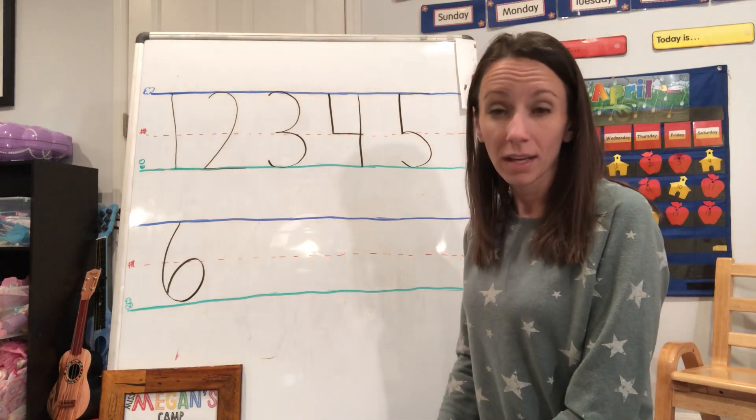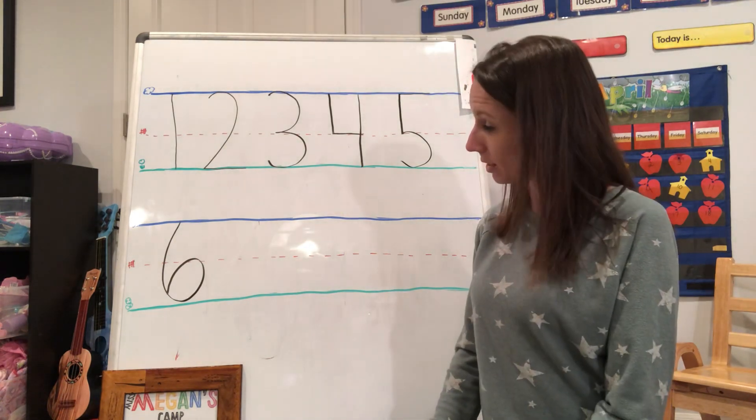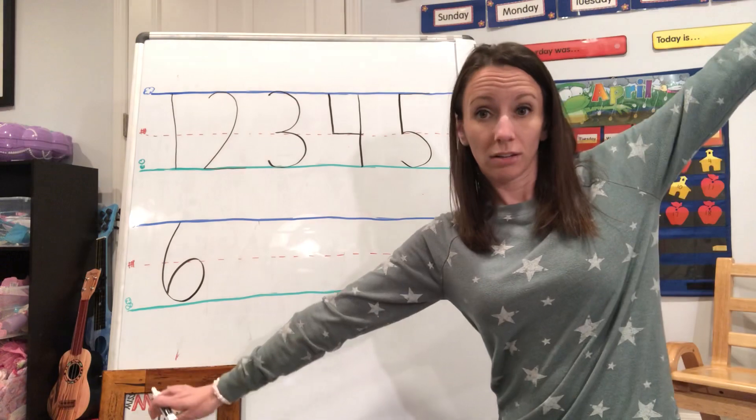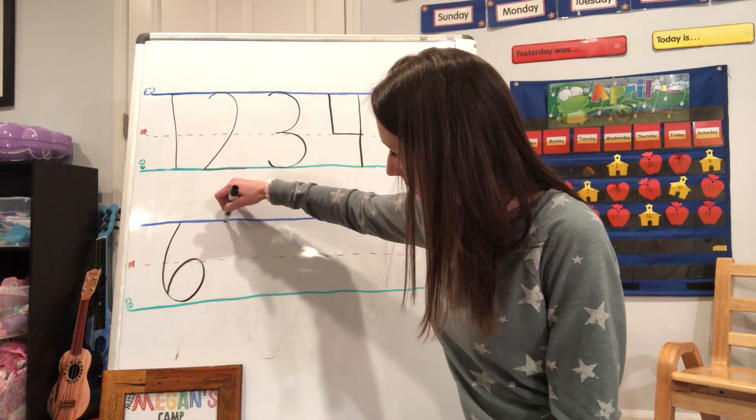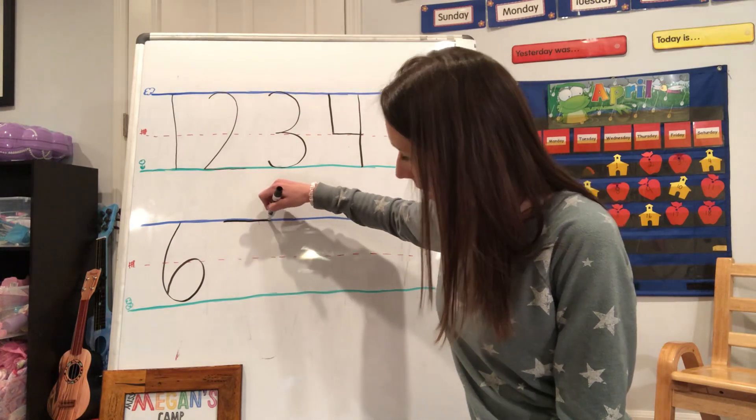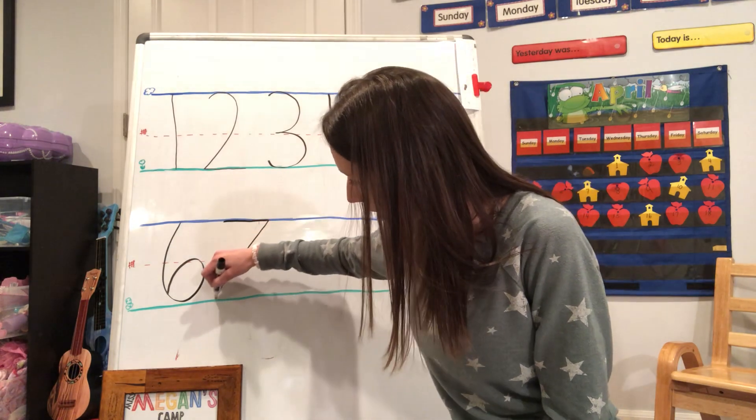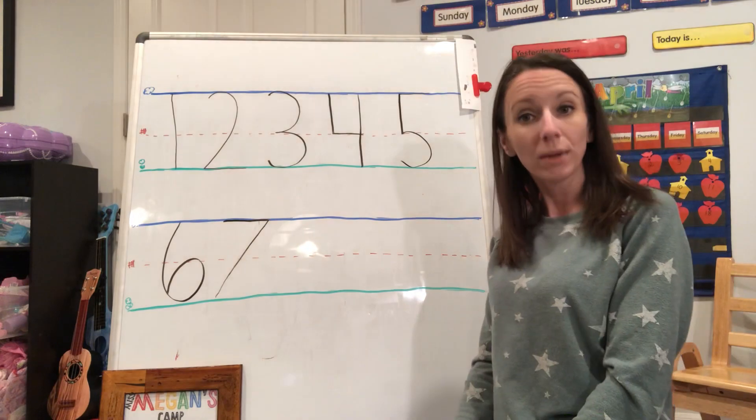Now number seven, it's gonna have a diagonal line. Remember what a diagonal line is? Diagonal line goes like this. So let's try that. We say, across the sky and down we're revving, that's the way we make a seven.